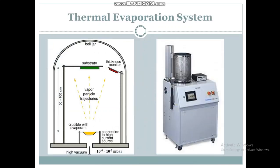In the thermal evaporation system, the evaporant or target material is placed in a crucible where heat is supplied and vapors are produced. These vapors strike the substrate and are deposited on it. A diagram of the thermal deposition system is shown here.